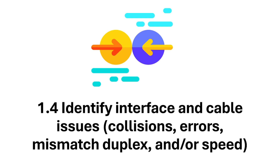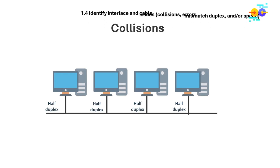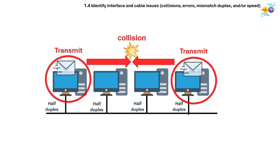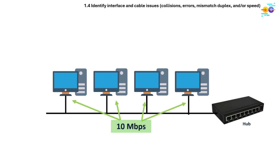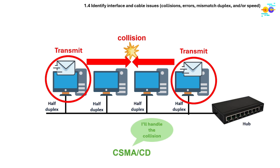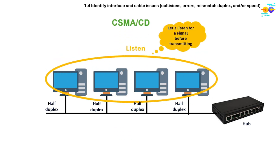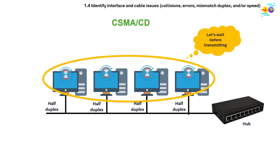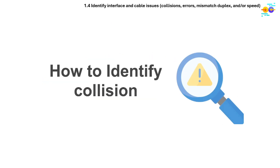Section 1.4 is about interface and cable issues. Collisions happen when two devices transmit data at the same time on a shared medium, causing data corruption. In a hub-based network, all devices share bandwidth — if two PCs send data simultaneously, their signals collide. This is handled by CSMA/CD in half-duplex Ethernet, where devices listen for a carrier signal before transmitting. If a collision occurs, they stop transmitting, send a jam signal, and wait a random amount of time before retrying.